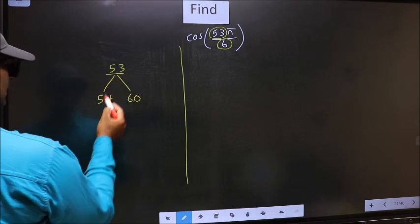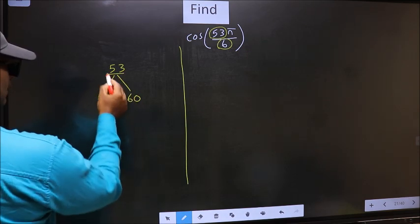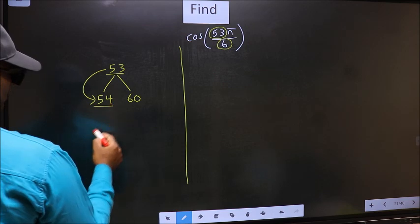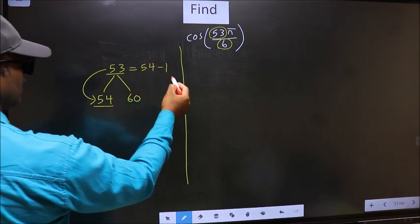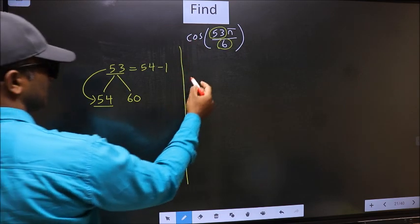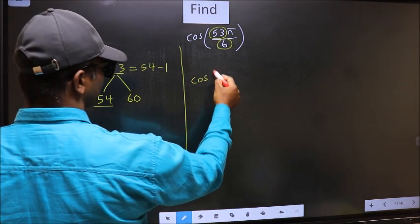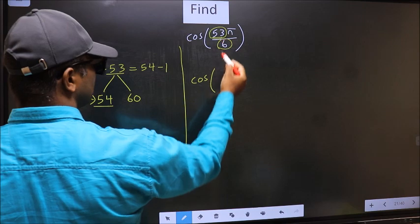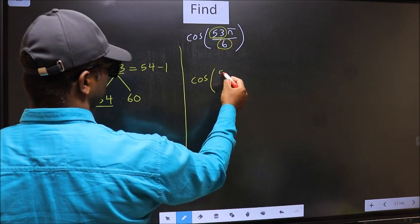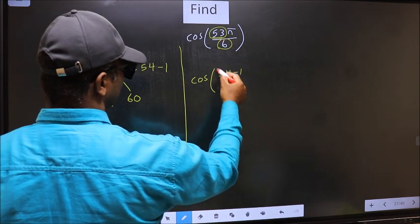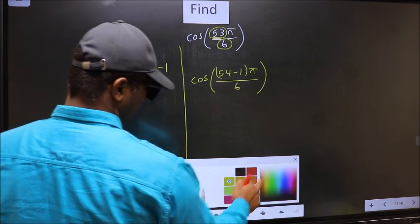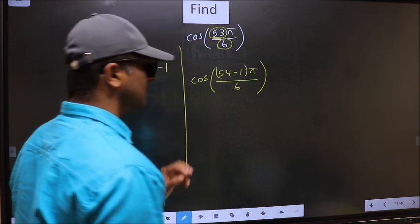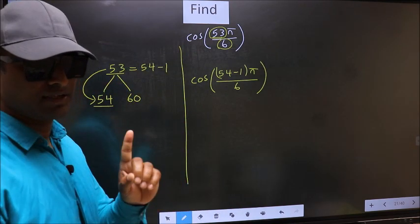So now 53 is close to 54. Therefore, 53 should be written as 54 minus 1. So this becomes cos of (54 minus 1)π/6. This is your step 1.